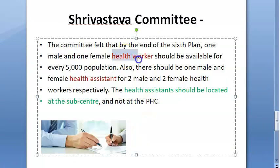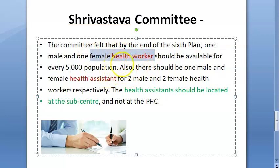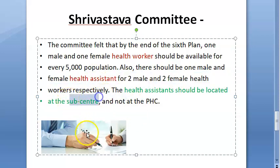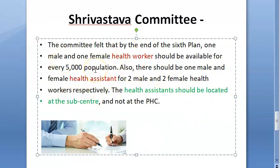For these health workers, they also specified the population norms: one female health worker and one male health worker for every 5,000 population. And for every two female health workers, one female health assistant — meaning for 10,000 population you will have one male health assistant and one female health assistant. These health assistants should be present at the sub-center level.